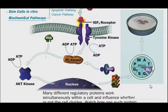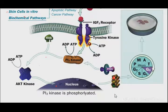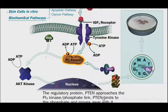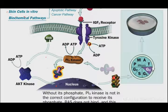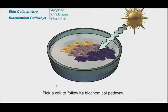Many different regulatory proteins work simultaneously within a cellular influence over whether or not cell division occurs. After IGF binds to membrane receptors, PI3 kinase is also activated through phosphorylation. But PTEN binds to the phosphate and moves away with it. Without a phosphate, PI3 kinase is not in the correct configuration to receive it; Ras does not bind. When PI3 kinase is deactivated, Ras protein is not activated, and the cell cycle will stop.